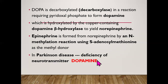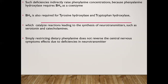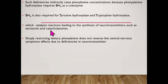In Parkinson's disease, there is a deficiency of the neurotransmitter dopamine. Such deficiency indirectly raises phenylalanine concentration because phenylalanine hydroxylase requires BH4 as a cofactor. BH4 is also required for tyrosine hydroxylase and tryptophan hydroxylase, which catalyze reactions leading to the synthesis of neurotransmitters including serotonin, dopamine, epinephrine, and norepinephrine. Simply restricting dietary phenylalanine does not reverse central nervous system effects due to neurotransmitter deficiencies.